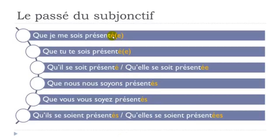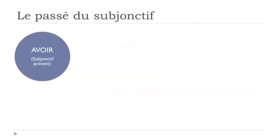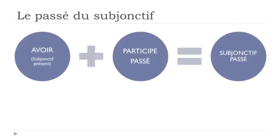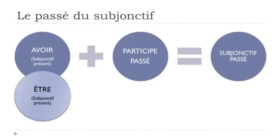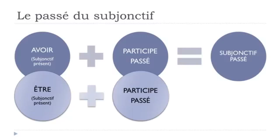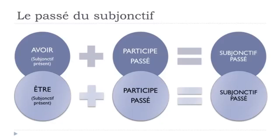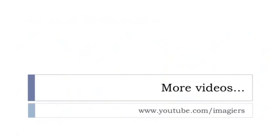Remember the agreement options: for the masculine il form — no addition; for the feminine elle form — add E accent aigu; for the masculine plural ils — add ES; for the feminine plural elles — add E accent aigu then S. To summarize: to construct the passé du subjonctif, put avoir at the subjonctif présent, then your participe passé, and you get your subjonctif passé. For the exceptions — aller, arriver, and all reflexive verbs — use être at the subjonctif présent, then the participe passé. That's it for le passé du subjonctif.